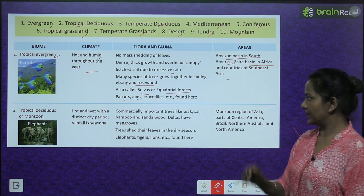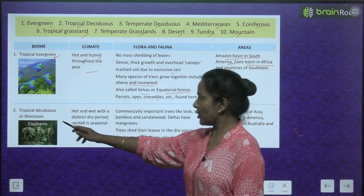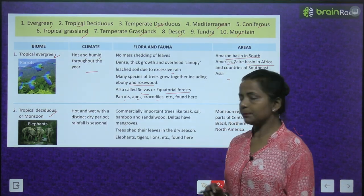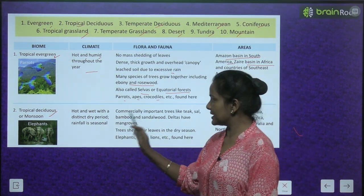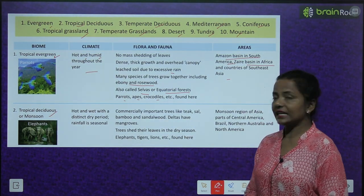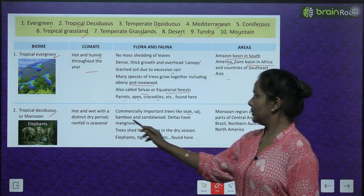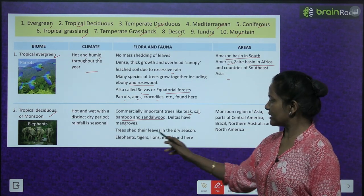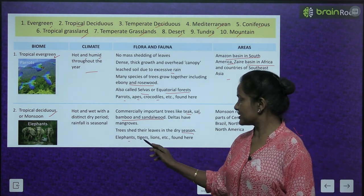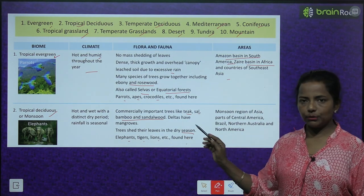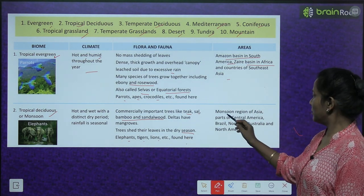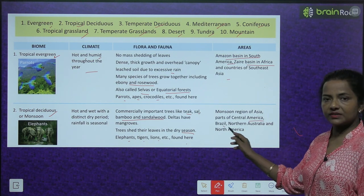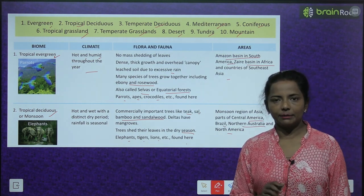Next is tropical deciduous or monsoon forest. Climate is hot and wet with a distinct dry period; rainfall is seasonal. Commercially important trees like teak, sal, bamboo, and sandalwood are found here. Deltas have mangroves. Trees shed their leaves in the dry season. Elephants, tigers, and lions are found here. Areas: monsoon regions of Asia, parts of Central America, Brazil, Northern Australia, and North America.